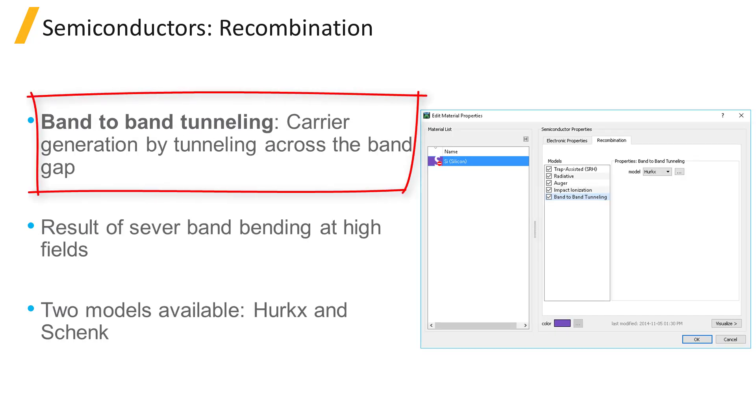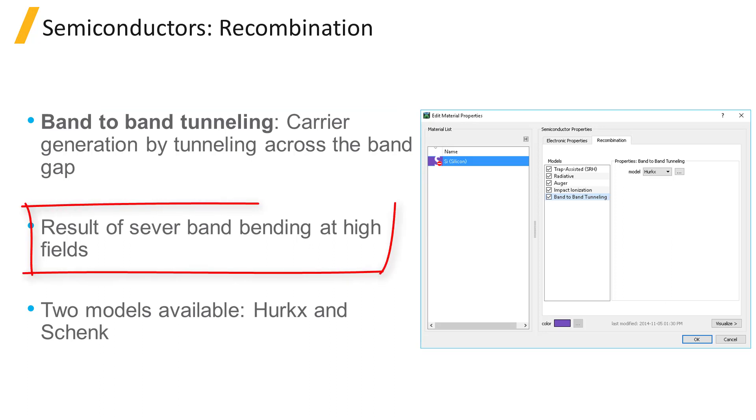Band-to-band tunneling is a carrier generation process in which an electron in the valence band of a semiconductor tunnels across the band gap to the conduction band without the assistance of traps. The band gap acts as a potential barrier that the particle tunnels across as a result of severe band bending due to high fields.